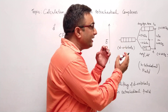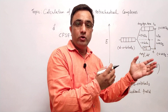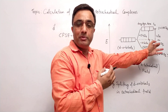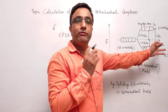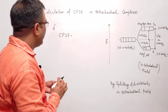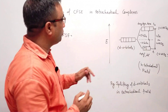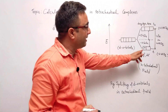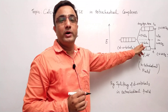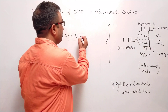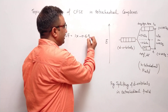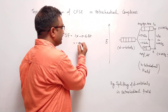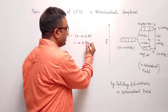We will calculate all CFSEs in terms of delta T. If there is a need to convert into DQ, we will convert delta T values into DQ by multiplying with 4.45. For D1 electronic configuration, one electron is there, so 1 multiplied by the stabilization factor which is minus 0.6 delta T comes out to be minus 0.6 delta T. This is the CFSE for D1 electronic configuration for a tetrahedral complex.